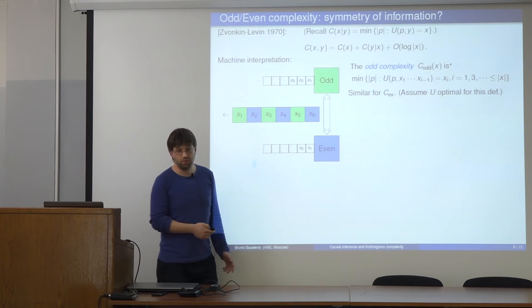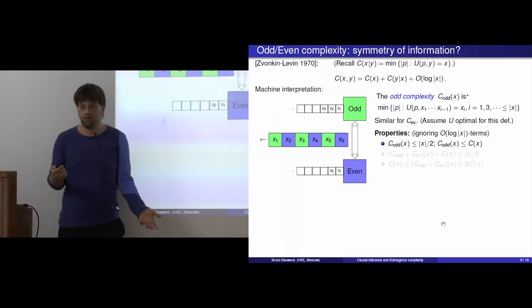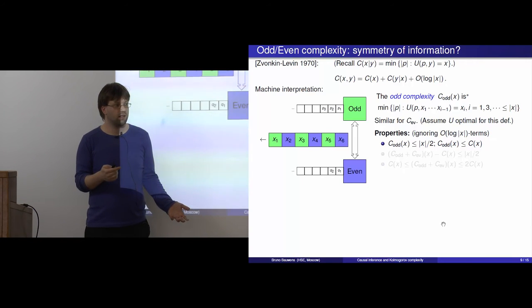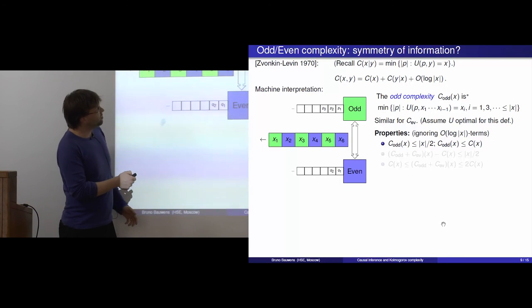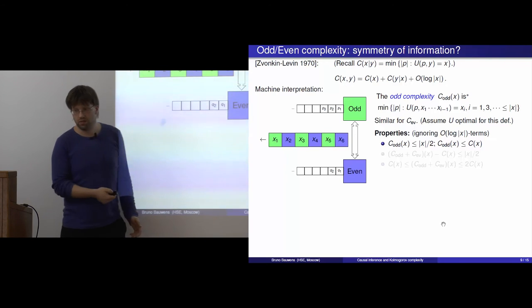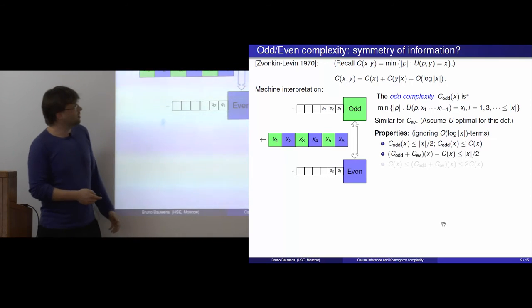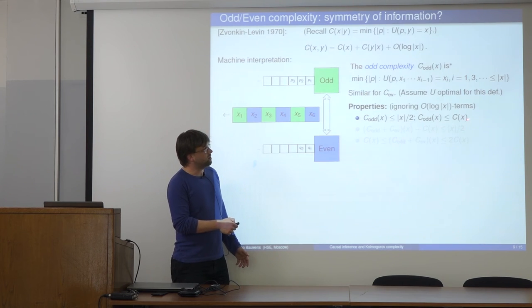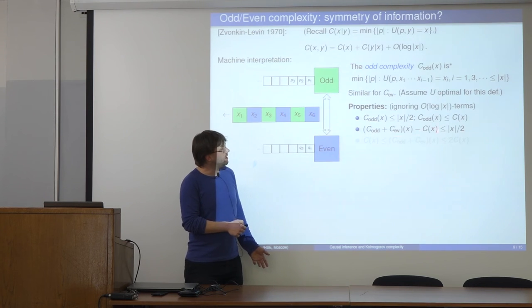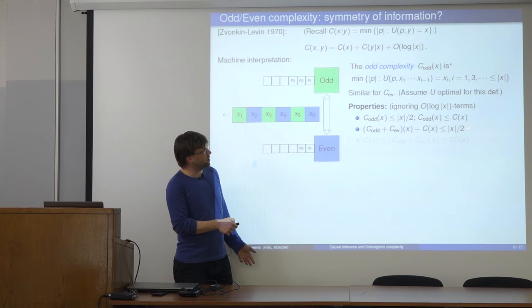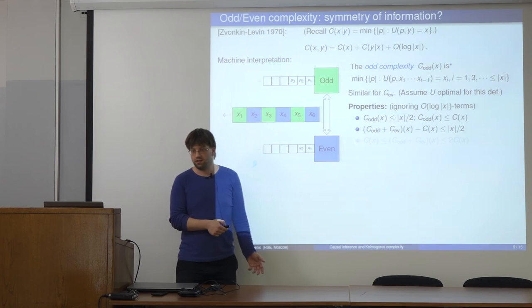This online complexity notion was introduced by Kolya, Sasha and others. Let us look at some basic properties. First, the odd complexity is bounded by the length of the string divided by two — because the program has to print at most half the bits of X, storing at most half of them. The odd complexity is also smaller than the full complexity, because printing only the odd bits is easier than printing everything. Adding these two bounds: odd complexity plus even complexity is always bounded by length over two, meaning printing the same string with two machines cannot be too much harder than printing with one machine.